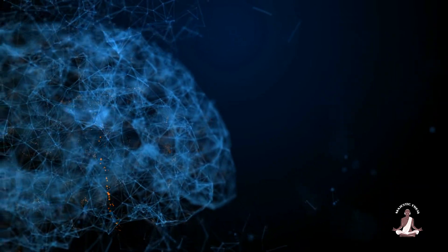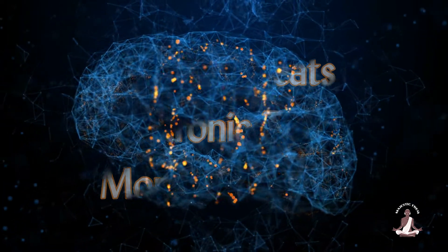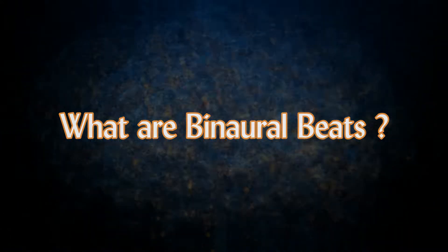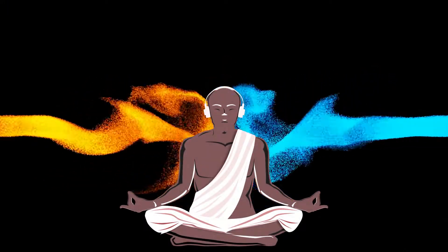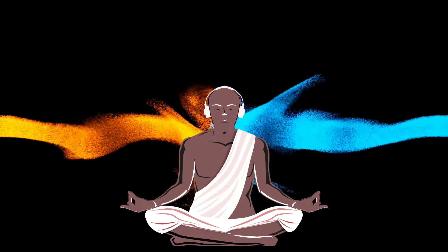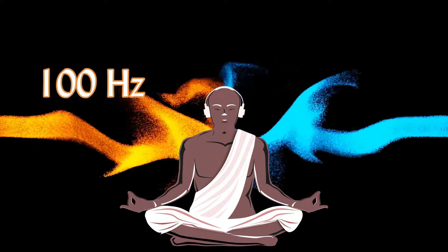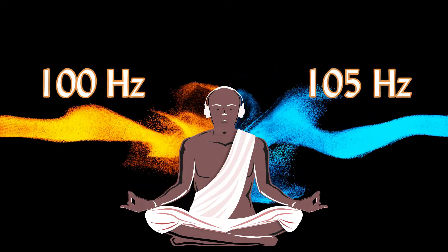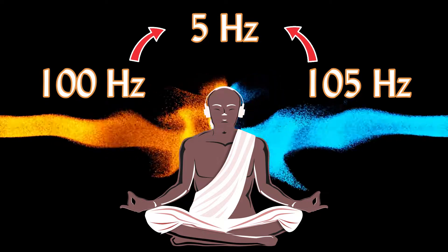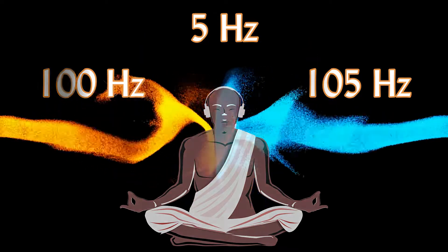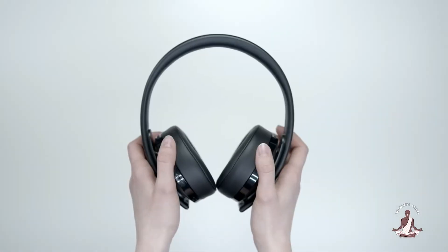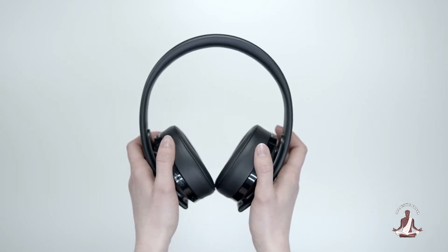To generate a brainwave entrainment audio session, the primary elements required are binaural beats, isochronic tones, and monaural beats. What are binaural beats? When two tones with slightly different frequencies are given to each ear, binaural beats are produced. For example, if you listen to a tone of 100 Hz in your left ear and 105 Hz in your right ear, your brain will automatically perceive an illusory tone and produce a new frequency of 5 Hz. This third tone is called a binaural beat. The brain automatically aligns the brainwaves to this different tone. Binaural beats necessitate the use of headphones since each ear receives a separate tone.